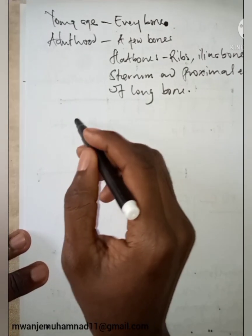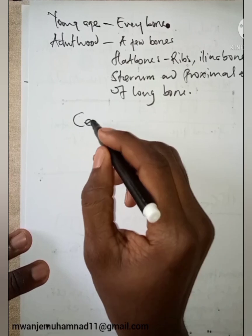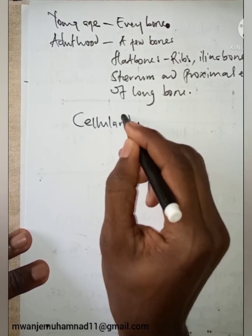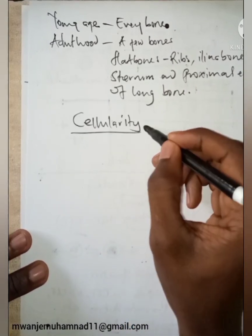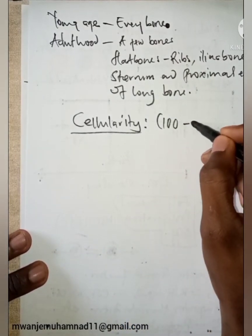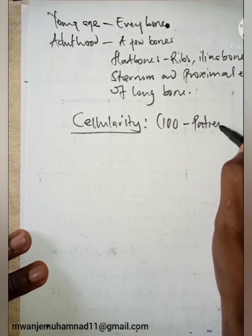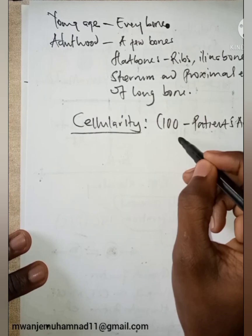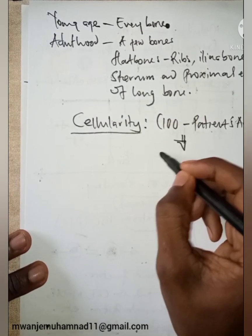There is some feature called cellularity. Cellularity of the bone marrow is crucial, and it has a formula of 100 minus patient's age to give the cellularity.